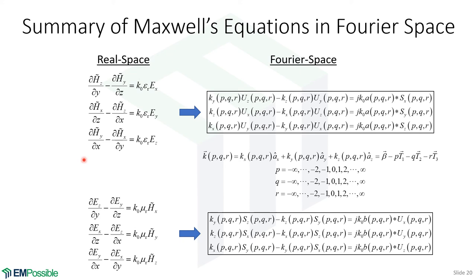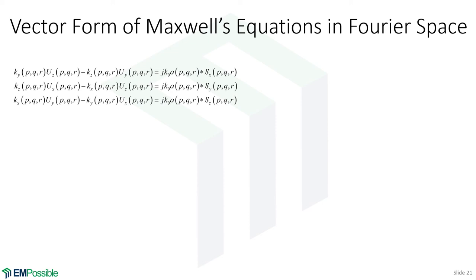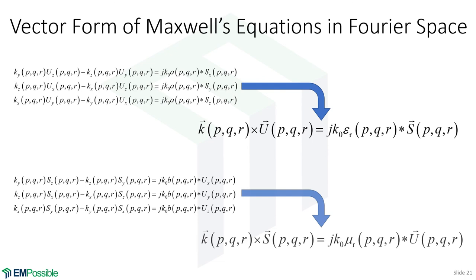We perform the same work for all six equations, arriving at two sets of Maxwell's equations in Fourier space. We note how the fields were expanded — using β and the reciprocal lattice vectors. It's also possible to bring the six scalar equations back to a vector form. In the first group, the wave vector K does a cross product with U, while ε is convolved with S — the amplitudes of the electric field spatial harmonics. The second set of equations looks almost exactly the same.